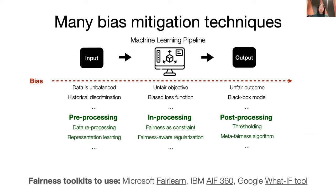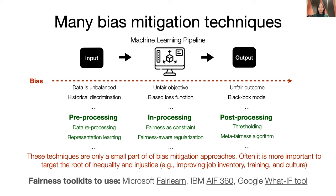If you're interested, besides the tutorials I mentioned earlier, also check out the many fairness toolkits available — they will make it much easier to implement these techniques. I want to emphasize that fairness is a socio-technical issue, and these bias mitigation techniques represent only a small set of solutions. It is often more important to reflect on the targeted root of inequality and injustice, such as improving job inventory, training, and culture.